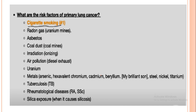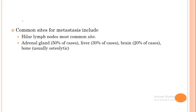The risk factors for primary lung cancer include, first and foremost, cigarette smoking. Others are radon gas, asbestos, coal dust — people who work in coal mining — irradiation, air pollution especially from diesel vehicles, metals, and diseases like tuberculosis, rheumatoid arthritis, and silicosis from silica exposure. All of these can increase the potential of having primary lung cancer. If primary lung cancer develops, it may also metastasize to other parts of the body.